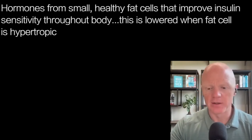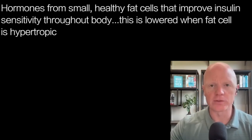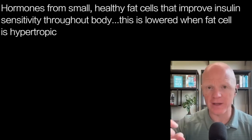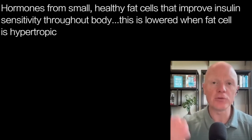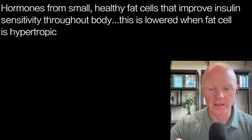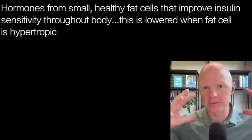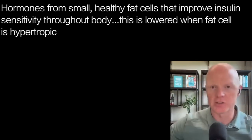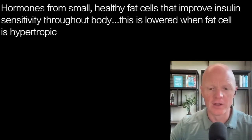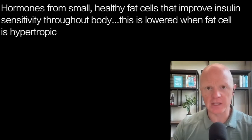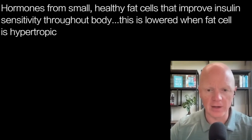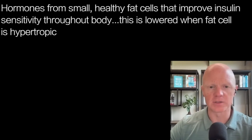At the same time, there are hormones from small healthy fat cells — like adiponectin — that improve insulin sensitivity throughout the body. But as the fat cell gets bigger and bigger, adiponectin production goes ever further down. So collectively, sarcopenic obesity ends up shifting hormone production in such a way as to further promote ever greater insulin resistance.